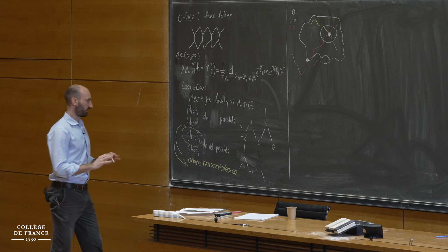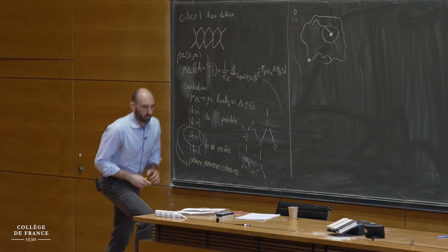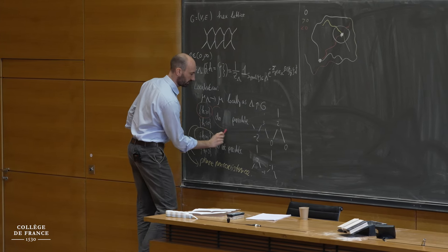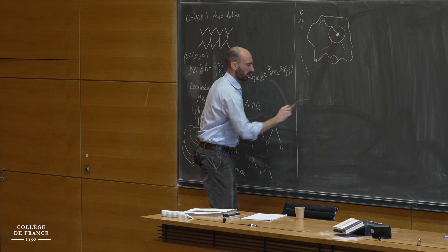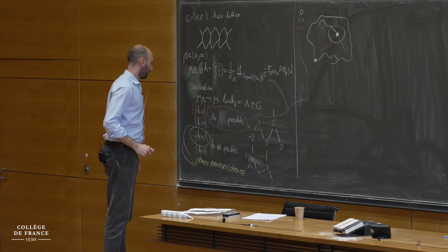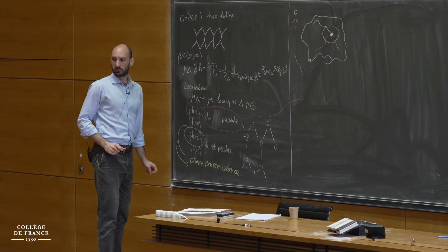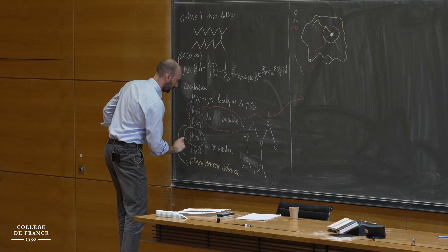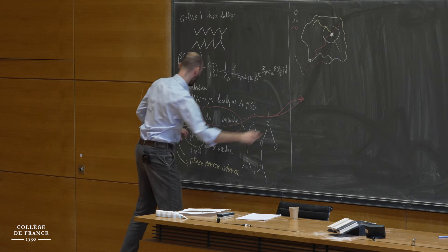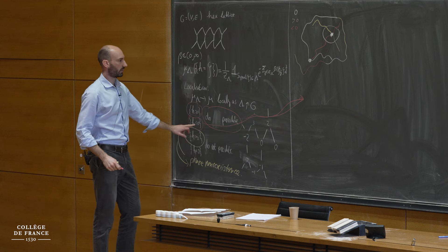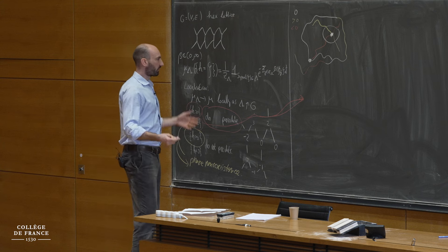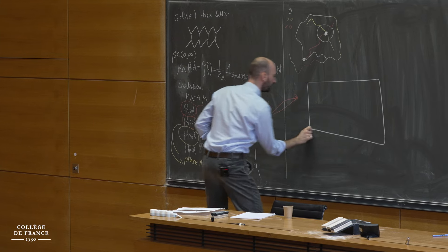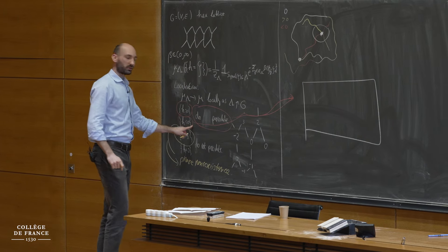Let's quickly recall how we prove this. So why does the strict set not percolate? Suppose this set percolates — then by symmetry this set also percolates. But then you have two competing sets which cannot use the same vertices, and two competing sets which both percolate is impossible by the phase coexistence theorem. That's the phase non-coexistence argument.